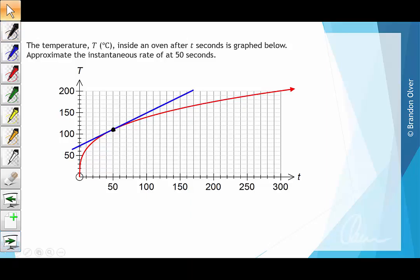So there's our tangent, and what we need to do next is determine two points that are on the tangent so that we can determine the gradient of that line.